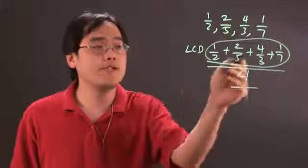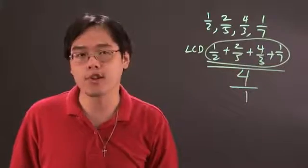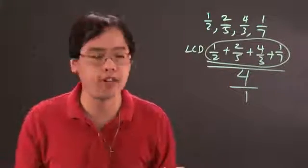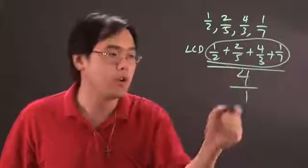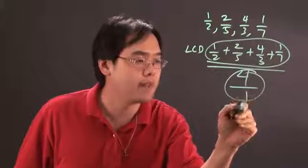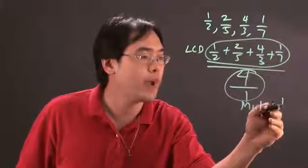So after you find the least common denominator of these four fractions and you add them, you're going to have some kind of another fraction altogether. When you're dividing by four, which is dividing by four over one, you're actually multiplying by one-fourth.